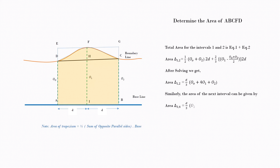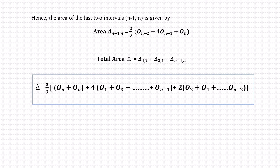Similarly, if we consider the nth interval — for example, intervals 3 and 4 — the area of interval 3–4 = D/3 × (O2 + 4O3 + O4). The area of the last two intervals, n−1 and n, = D/3 × (O(n−2) + 4O(n−1) + On). The total area Δ = Δ₁₂ + Δ₃₄ + … + Δ(n−1,n). Combining all terms, the general formula is: Δ = D/3 × [O0 + On + 4(O1 + O3 + … + O(n−1)) + 2(O2 + O4 + … + O(n−2))].